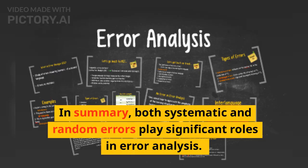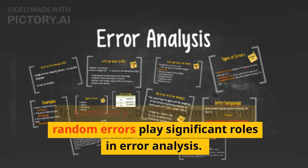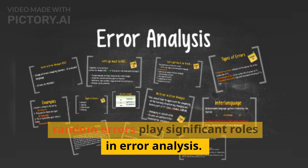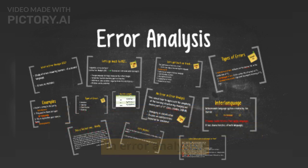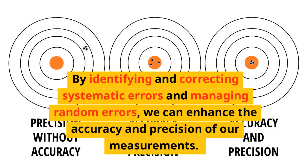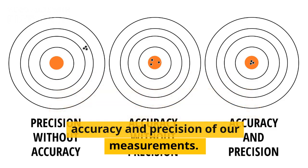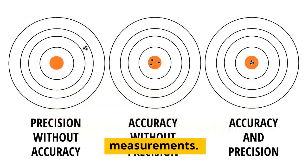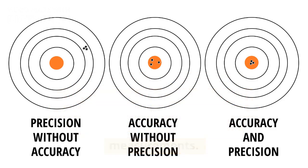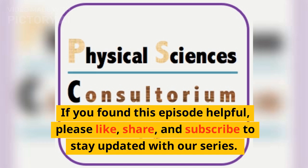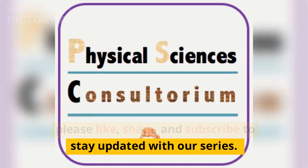In summary, both systematic and random errors play significant roles in error analysis. By identifying and correcting systematic errors and managing random errors, we can enhance the accuracy and precision of our measurements. If you found this episode helpful, please like, share, and subscribe to stay updated with our series.